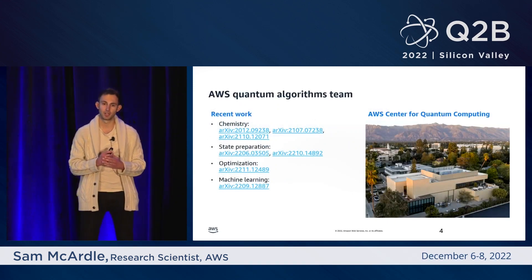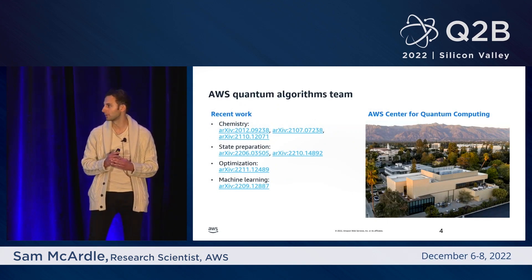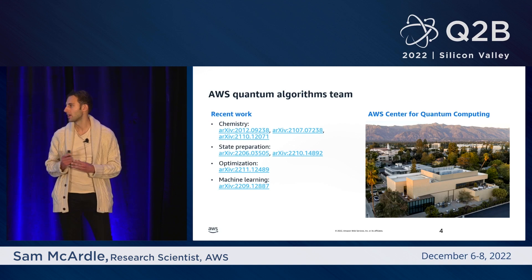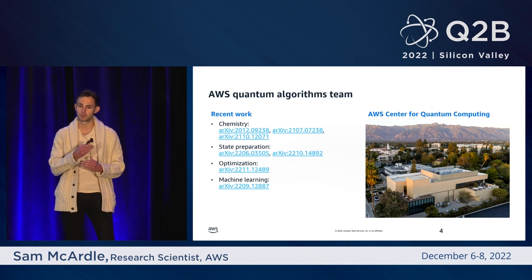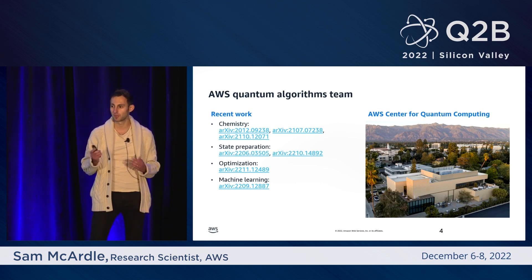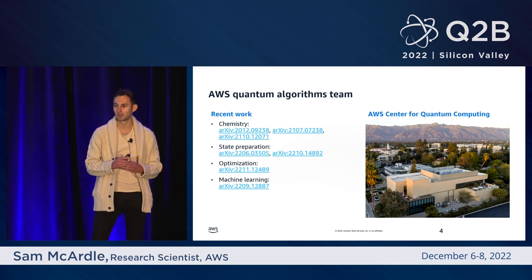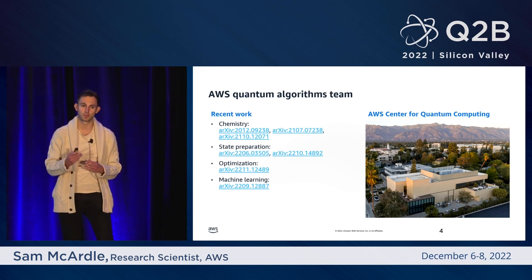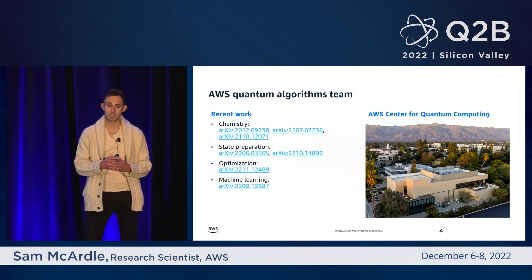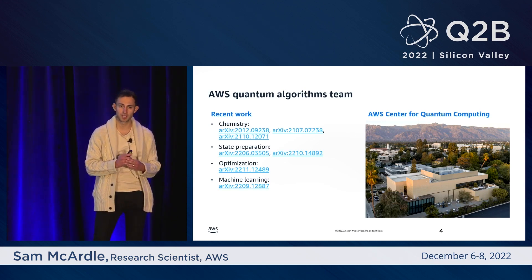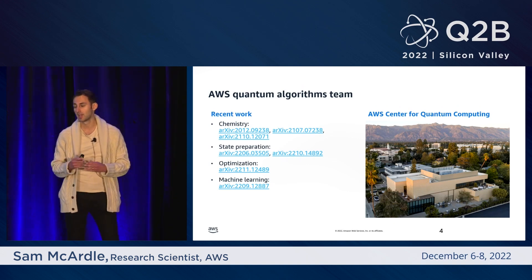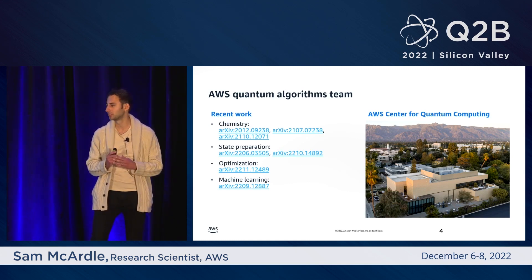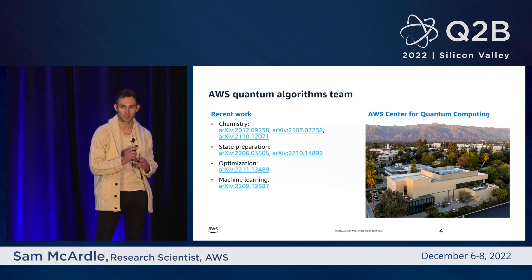I've listed here a selection of problems that we've worked on over the last couple of years. Many of these works were done in collaboration with our partners in industry and academia. We have a wide range of interests spanning quantum algorithms, specifically focused on the fault-tolerant error-corrected regime, as this is where we expect quantum computers to offer the most benefit in the future. Our team is predominantly based at the Center for Quantum Computing in Pasadena, located on the Caltech campus, and we are gradually growing our team. So if you have a strong background and interest in quantum algorithms, please grab me for a chat later at the AWS booth in the main hall.